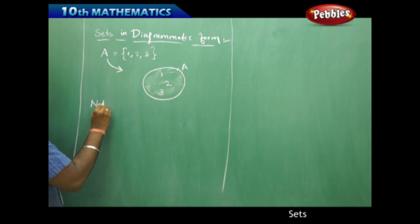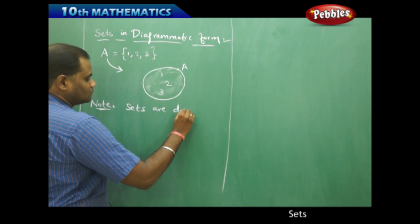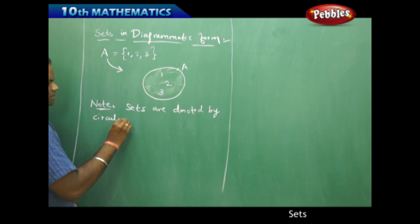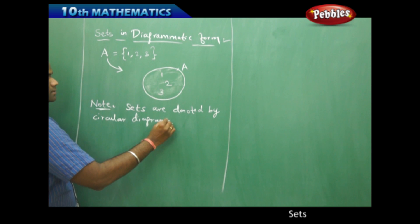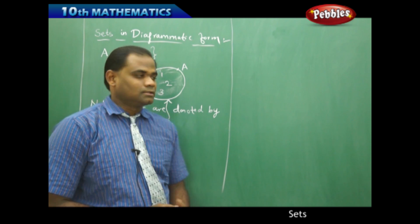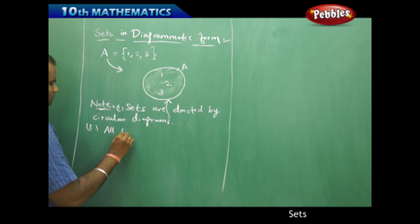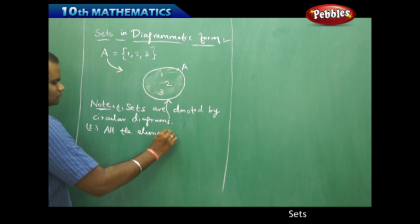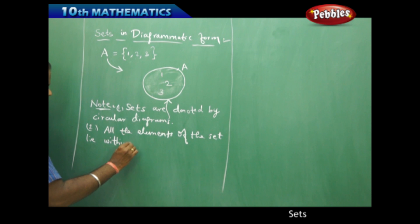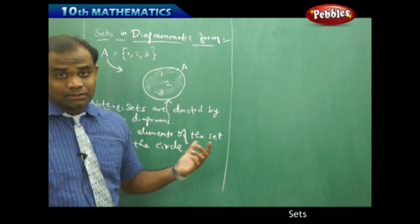With the learning outcome: sets are denoted by circular diagrams. As you can see, the elements of the set lie inside the circle. This is how I understand the diagrammatic representation.